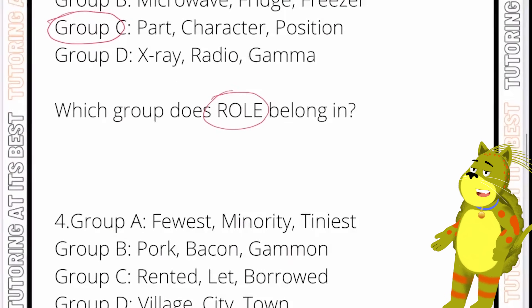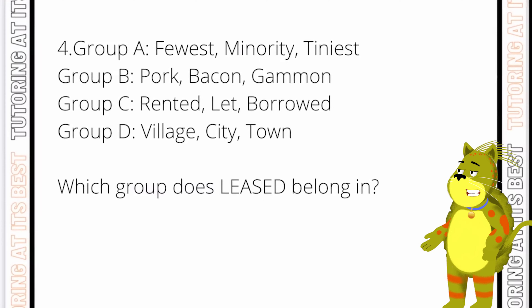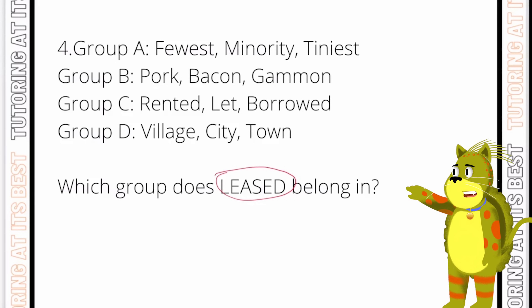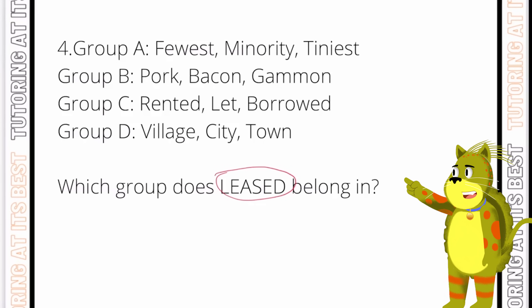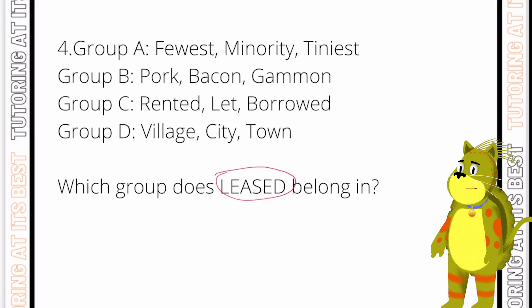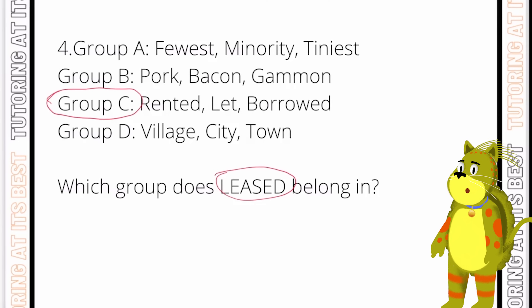Question four: we're now working with the word 'least'. Vocabulary will serve you well here. Let's start with group A — fewest, minority, tiniest — so that looks like the size of something. Whilst our word 'least' is almost like 'leased'. If you lease something you can use it for a short time, so that way it would belong in group C.